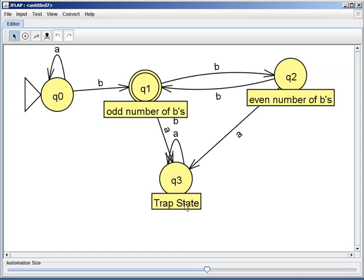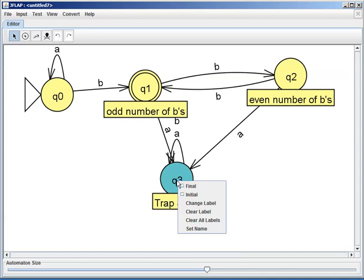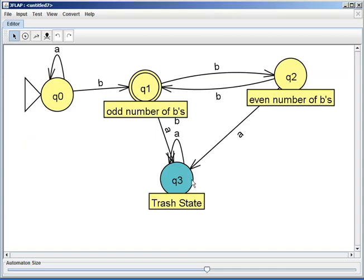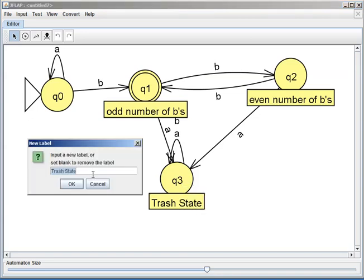I'm gonna change this because I call this a trash state, not a trap state. You know what, I right clicked on the white space, I didn't right click up here. So I'm gonna start by right clicking on Q3 and I want to change Q3's label. Instead of calling it a trap state, I'm gonna call it a trash state. There's nothing special about trash state - I could also call it a hippopotamus state.